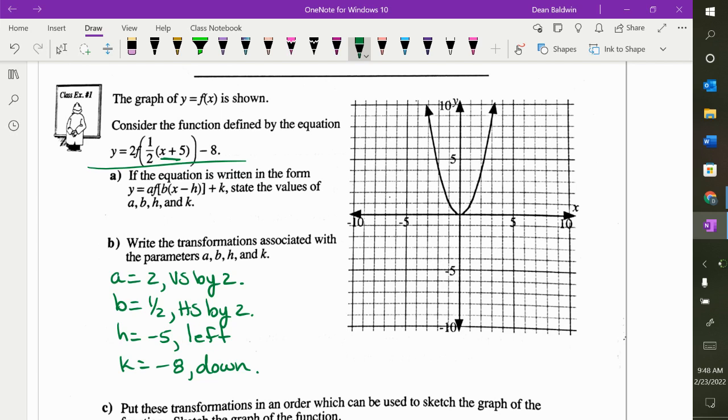A is two, vertical stretch by two. I multiply all Y values by two. I'm not going to do all the Y values, I'm just going to do one or two of them. This one at one, multiply by two, goes to two. The zero stays the same. It stretches it, pulls it up.